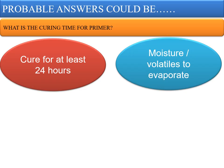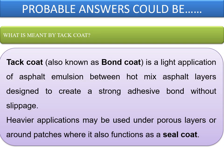If the question asked is what is the curing time for a primer, the answer is that the curing time is at least 24 hours, because by that time the moisture and volatiles evaporate completely. A tack coat, also known as a bond coat, is a light application of asphalt emulsion between hot mix asphalt layers designed to create a strong adhesive bond without slippage. Heavier applications may be used under porous layers or around patches where it also functions as a seal coat.